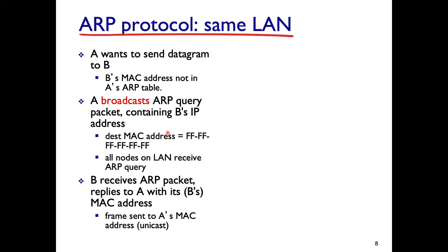Let's look at the steps ARP uses to build and use this table. For example, A wants to send a datagram to B. A can find B's IP address via DNS, but it needs B's destination Ethernet MAC address to build the Ethernet frame. If B's MAC address is not in A's ARP table, A doesn't know it yet.